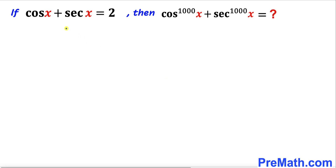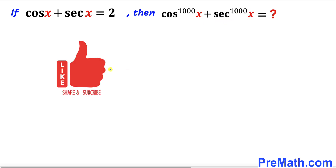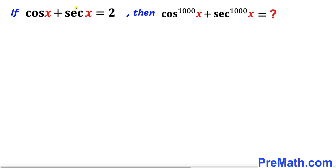Welcome to pre-math. In this video we have got this trigonometric problem: cosine of x plus secant of x equals 2, and then we are going to find the value of cosine to the power 1000 of x plus secant to the power 1000 of x. Let's go ahead and get started.